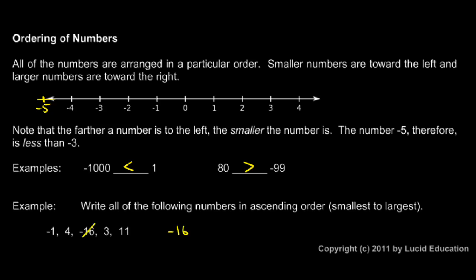And I'll just cross that out to help me keep track of which ones I've written. Then the next smallest number would be negative one, so I'll write that. And then I can write my three, and then you can see four and eleven are next. So those are those numbers written in ascending order.